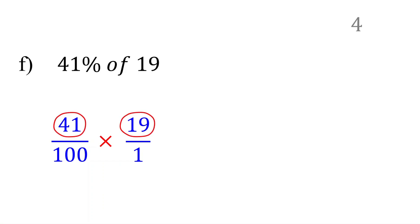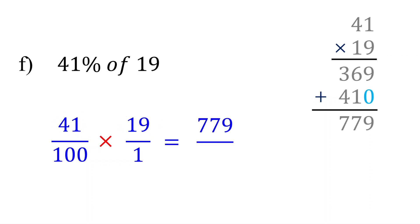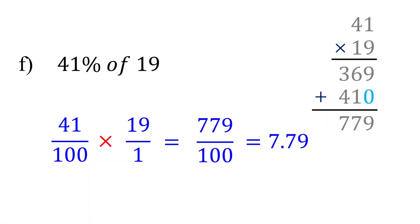In the numerator, multiply 41 and 19. 9 times 1 is 9. 9 times 4 is 36. Put a 0 under the 9 as a placeholder. 1 times 1 is 1, and 1 times 4 is 4. Now add these numbers together. 9 plus 0 is 9. 6 plus 1 is 7. 3 plus 4 is also 7. So 41 times 19 equals 779. In the denominator, 100 times 1 equals 100. Dividing by 100 is the same as moving the decimal point 2 places to the left. So this is equal to 7.79.